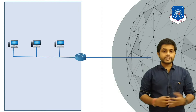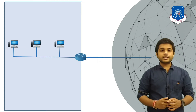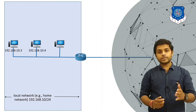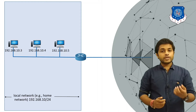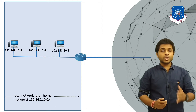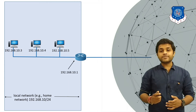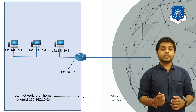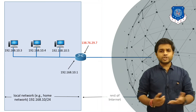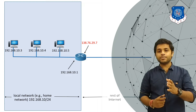Let's understand with an example. You can see on the screen three devices connected in a local area network. The first device has IP address 192.168.10.3, the second 192.168.10.4, and the third 192.168.10.5. The router has two interfaces: the LAN side interface has IP address 192.168.10.1, and the WAN side interface has the public IP address 138.76.29.7, which was purchased from the internet service provider.